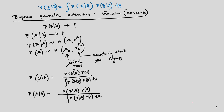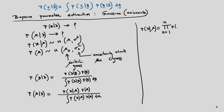p(mu|D) is the probability of the mean given the training dataset D. Since training samples are drawn independently — this is supervised training, with a training dataset for each class — we can write p(D|mu) as a product: the product over k of p(x_k|mu).